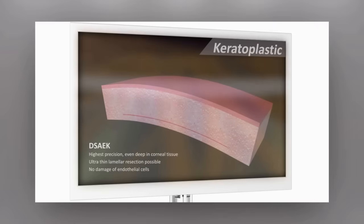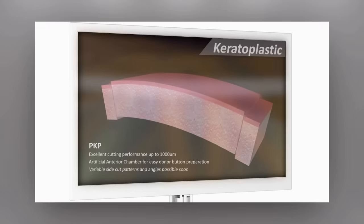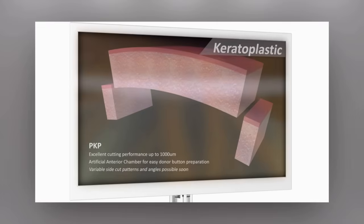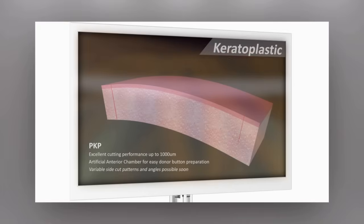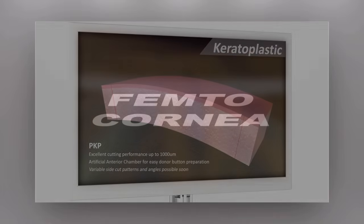The DSEC option allows extreme precision even in deep corneal tissue, minimizing damage to the endothelial cells. Penetrating keratoplasty is possible to a depth of 1,000 microns. An artificial chamber for easy donor tissue preparation is available. The cornea tower is constantly growing and being refined as we continue to learn.